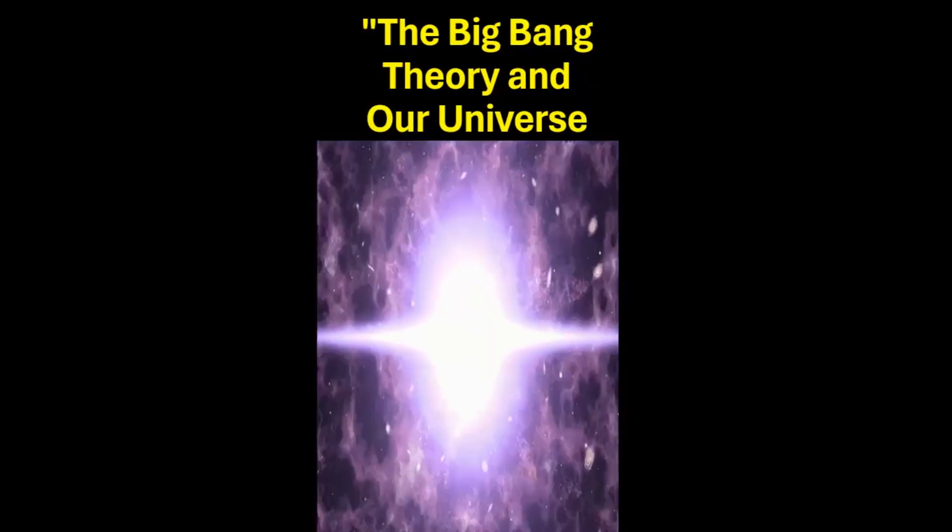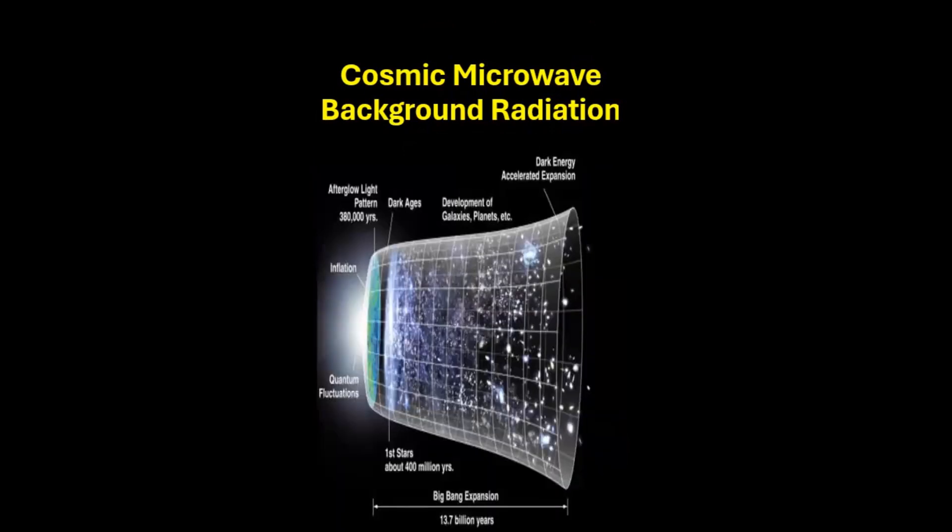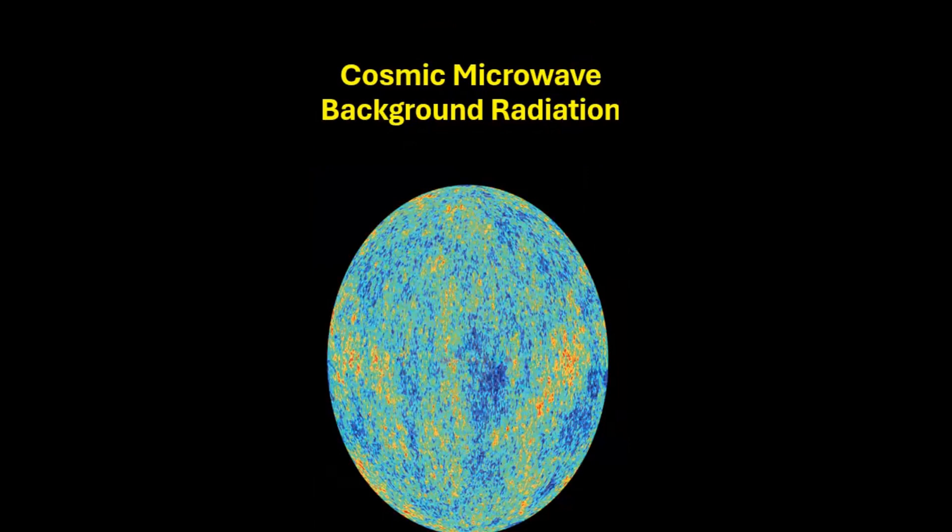The remnants of this cosmic explosion is called CMDR or Cosmic Microwave Background Radiation. Think of CMDR as the echo of the Big Bang. It's like the warmth you feel when you open the microwave after cooking, except in this case, the microwave is the entire universe. CMDR is a faint, uniform glow of microwave radiation that permeates the entire universe. It's the residual heat from the big bang.